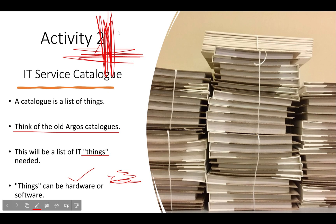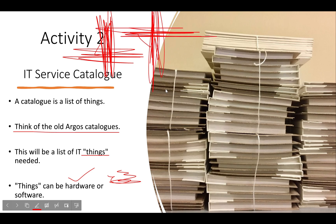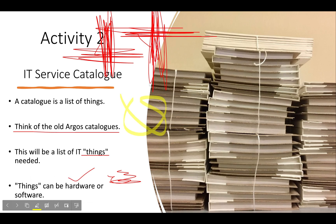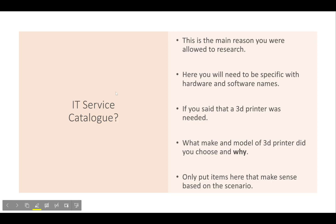When I move my mouse left to right it moves the cursor, but if I click and move it, it writes in red — I chose red, I can choose a different color. This is all being done in software. So, IT Service Catalog — this is the main reason you were allowed to do research.